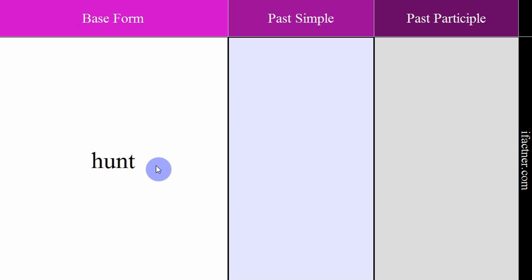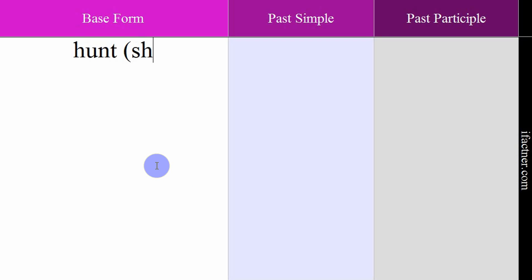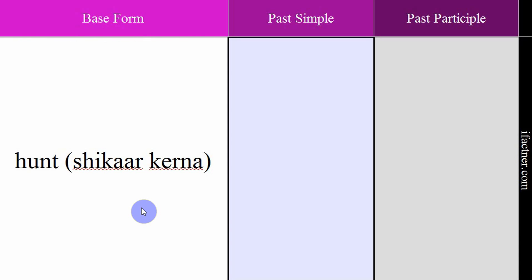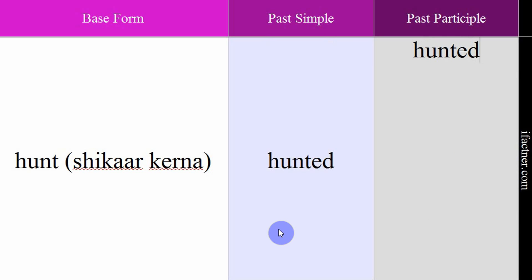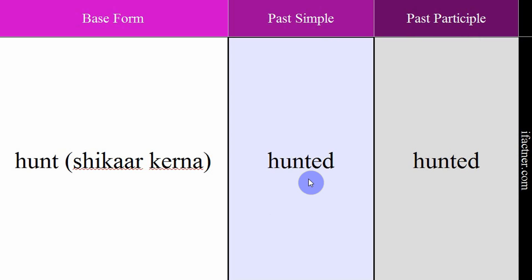The next verb is 'hunt', meaning shikaar kerna — to hunt. Example: 'I don't hunt.' — Mein shikaar nahin kerta. Past simple and past participle: hunted. Past simple: 'The hunter hunted the tiger.' — Shikaari ne tiger ka shikaar kiya. Past participle: 'I have never hunted.' — Maine kabhi bhi shikaar nahin kia hai. Verb: hunt. Meaning: shikaar kerna. Past simple: hunted. Past participle: hunted.